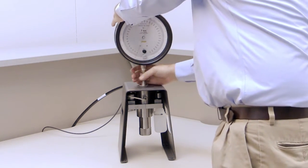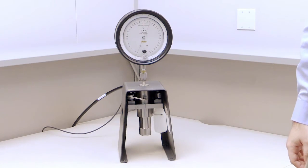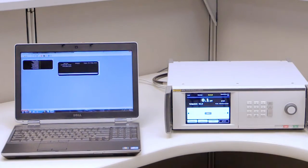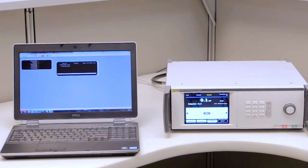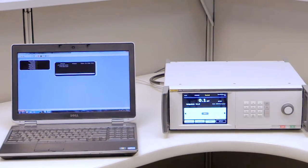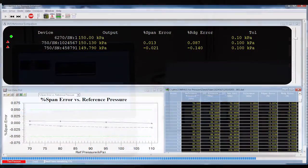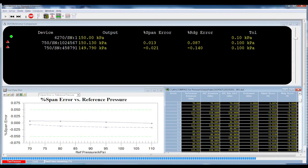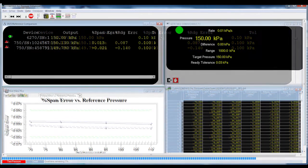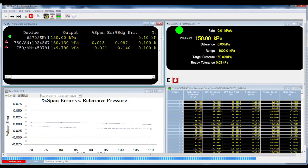The CPS also acts as a test stand for connecting units under test. Automate the 6270A with Fluke Calibration Compass software. It's designed specifically for pressure calibration. Compass lets you run complete automated pressure calibration sequences on single or multiple devices under test for the ultimate in throughput and consistency.